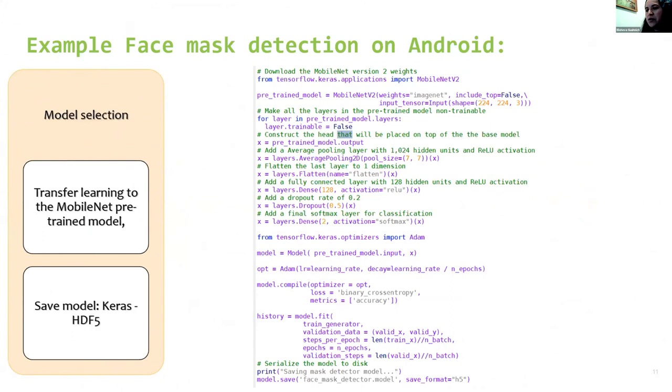For example, face mask detection on Android. Pick up a model, a MobileNet pre-trained model, apply transfer learning with a Kaggle face mask dataset. And finally, save model in Keras format. Save model is good practice. It's not required for TensorFlow 2 version.